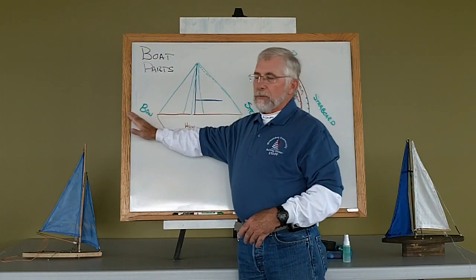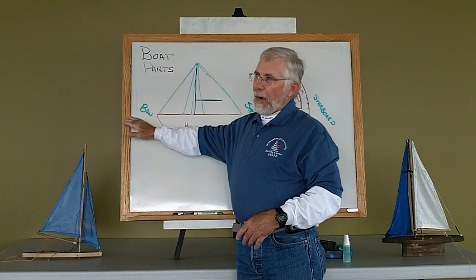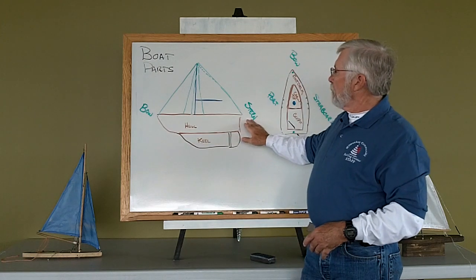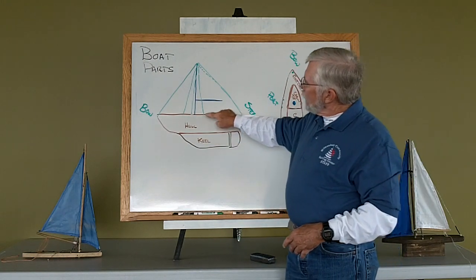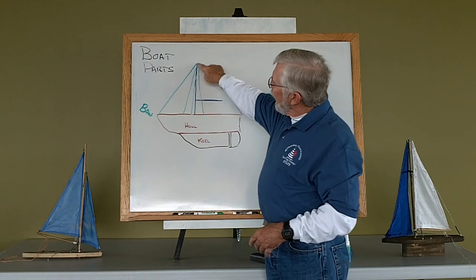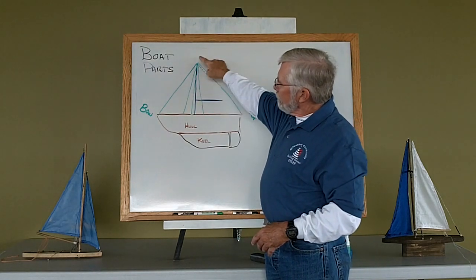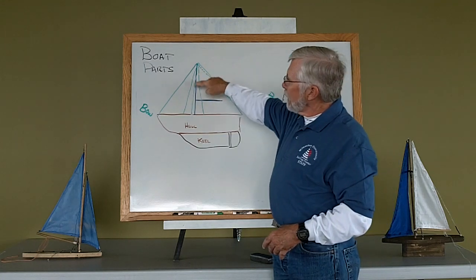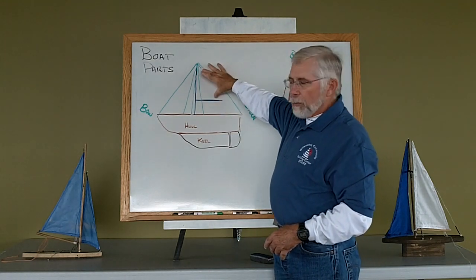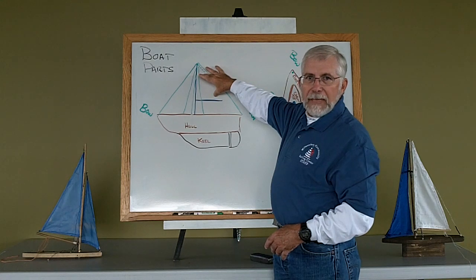The front of the boat is referred to as the bow, the back of the boat is referred to as the stern. And here we have the mast going up and the boom coming back. The mast and the boom will be what we put our mainsail on.